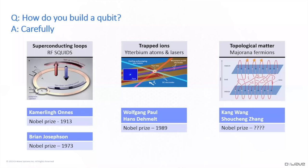There are many different physical ways of building a qubit. These are three options being pursued by different companies today. On the left, superconducting loops — this is what D-Wave uses to build our quantum computers. It's also what IBM uses and what Rigetti uses. The notion here is you can put a little bit of current through the loop in one direction or the other direction, and those represent the two states of your qubit.